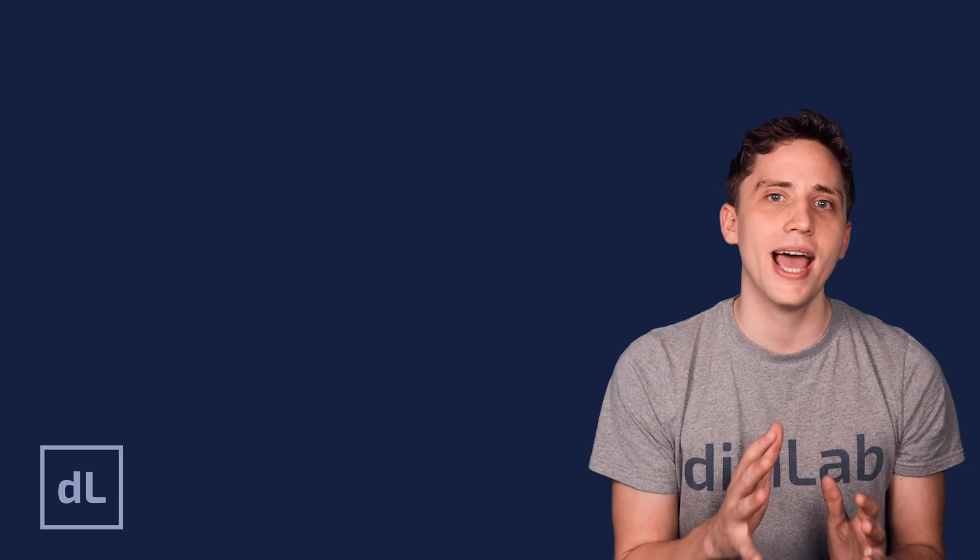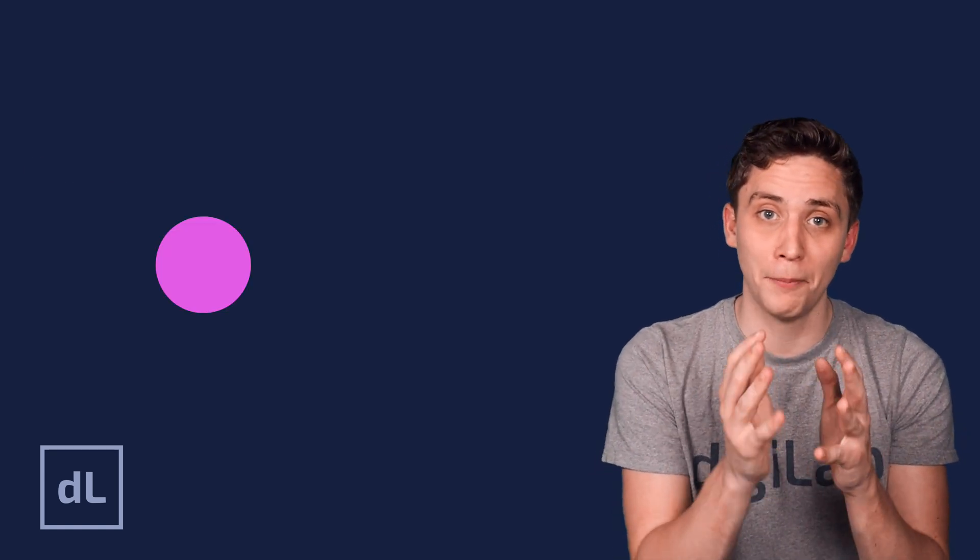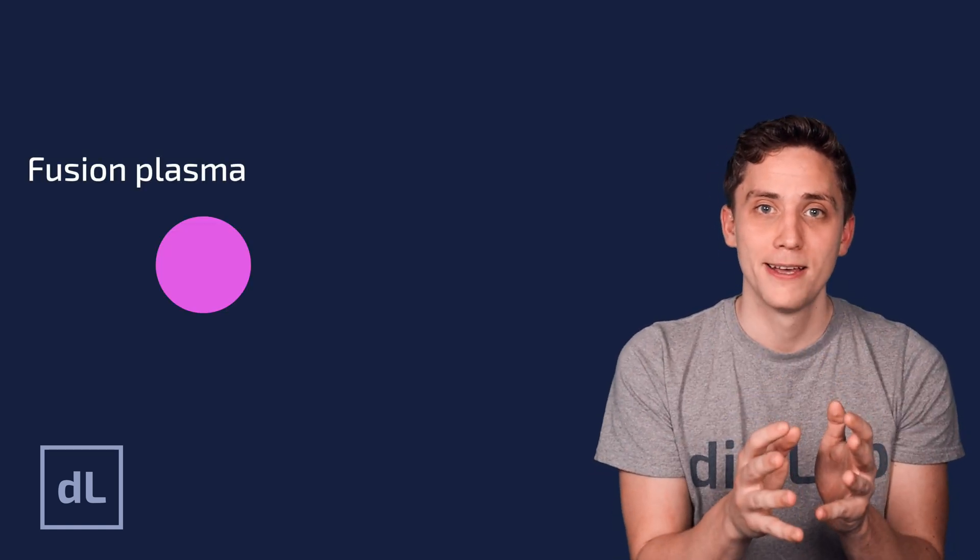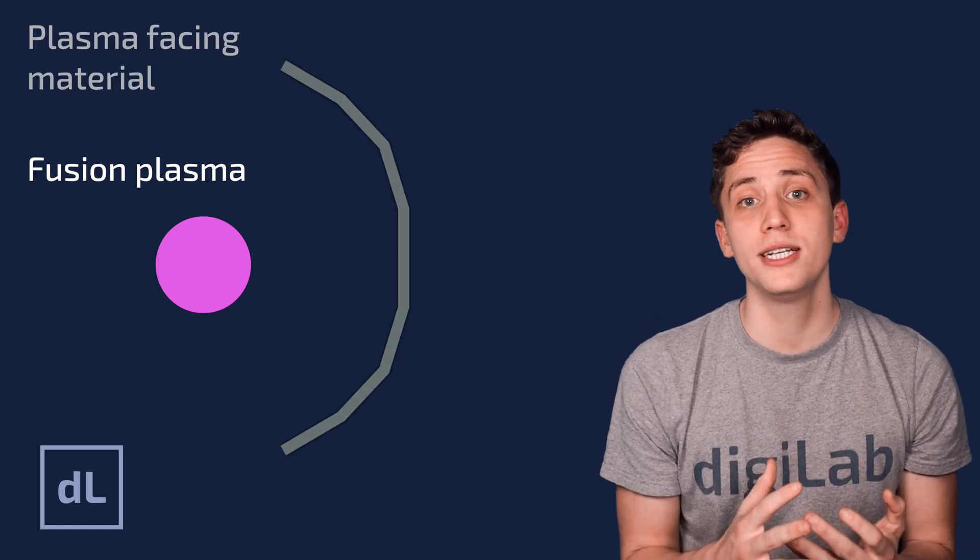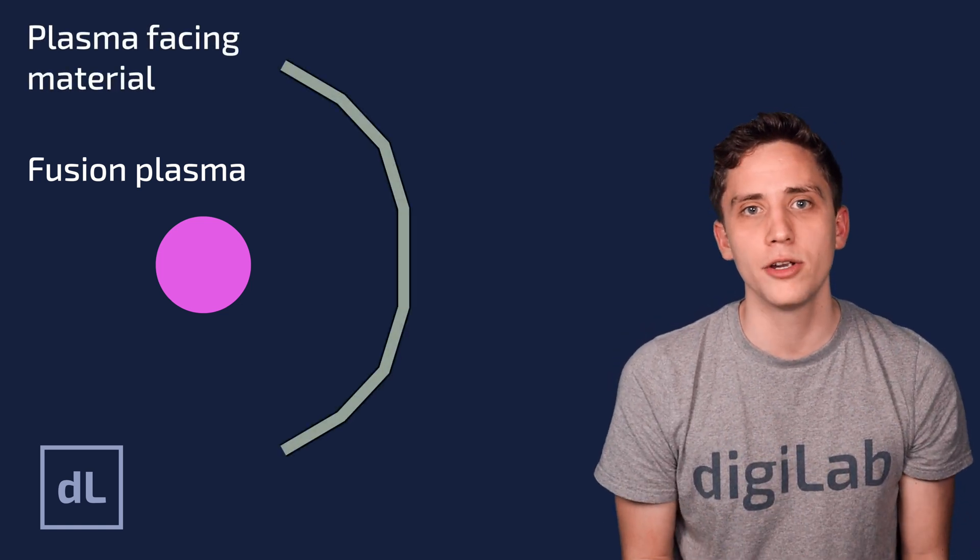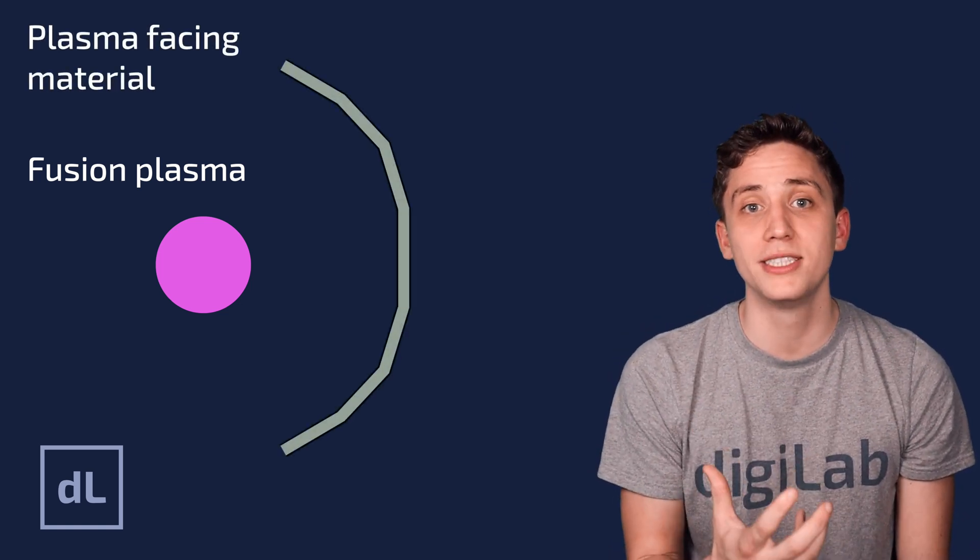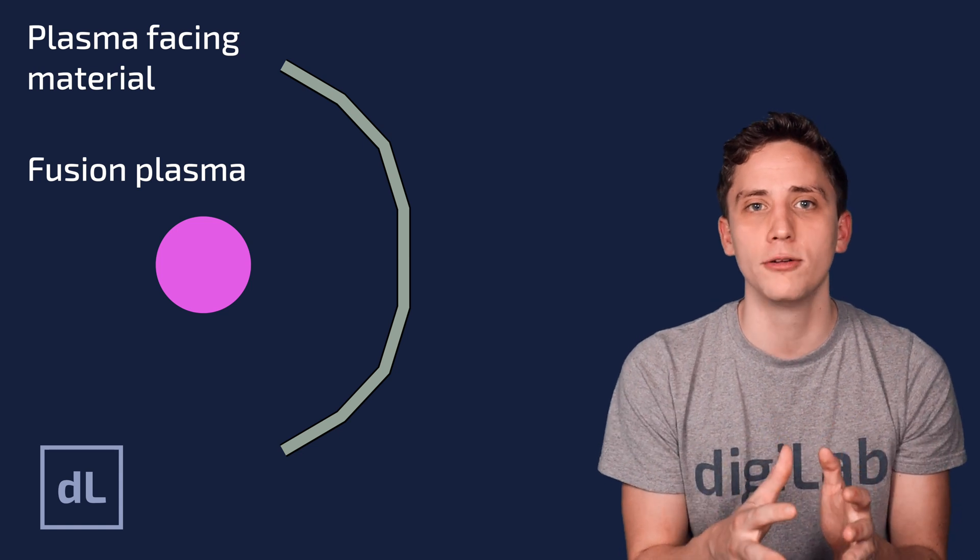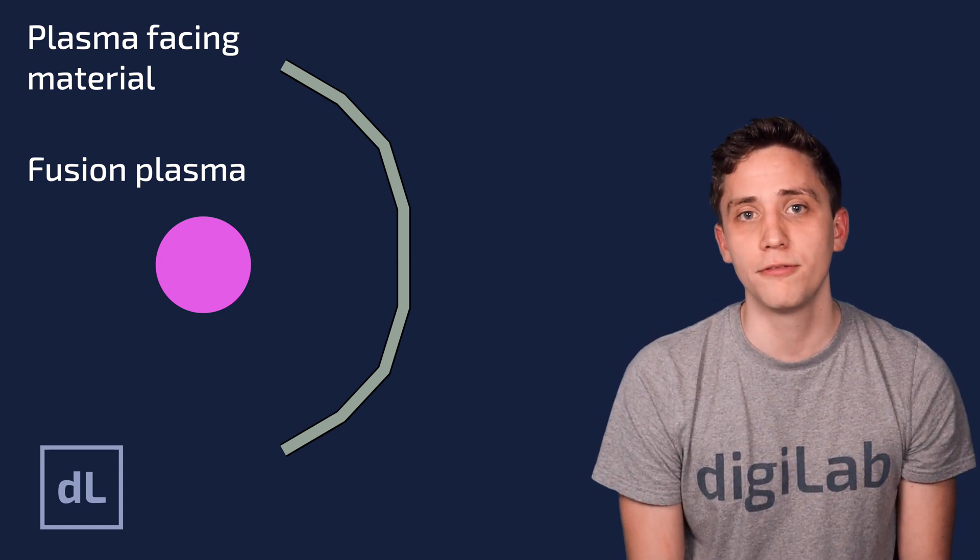But even though they have different methods, all fusion power plants of the future will have some things in common. For example, all the power plants will need some sort of burning fusion plasma at their core. But surrounding this, they'll also need some sort of plasma-facing material, which needs to be very strong and resistant to the high heat loads that they'll receive from the burning fusion plasma.